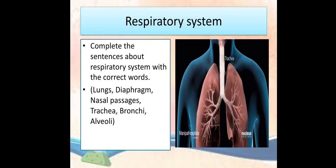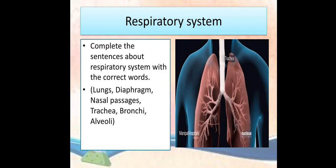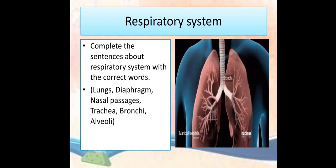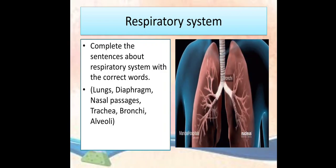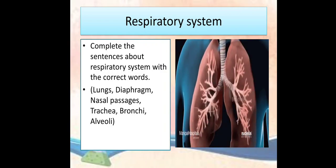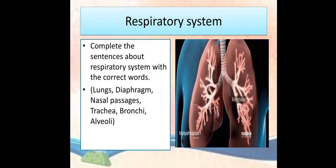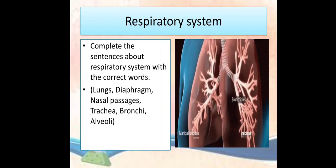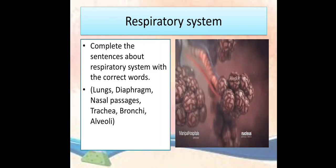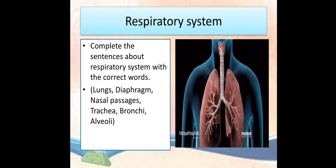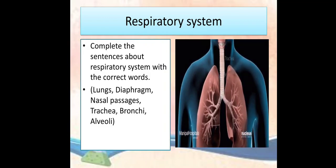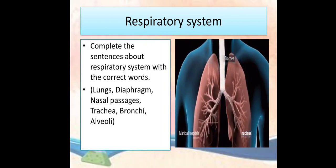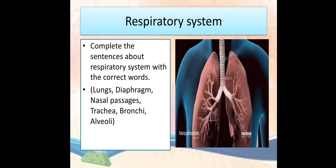The next life process is the respiratory system. Complete sentences about the respiratory system with the correct words. The words are: lungs, diaphragm, nasal passages, trachea, bronchi, and alveoli.